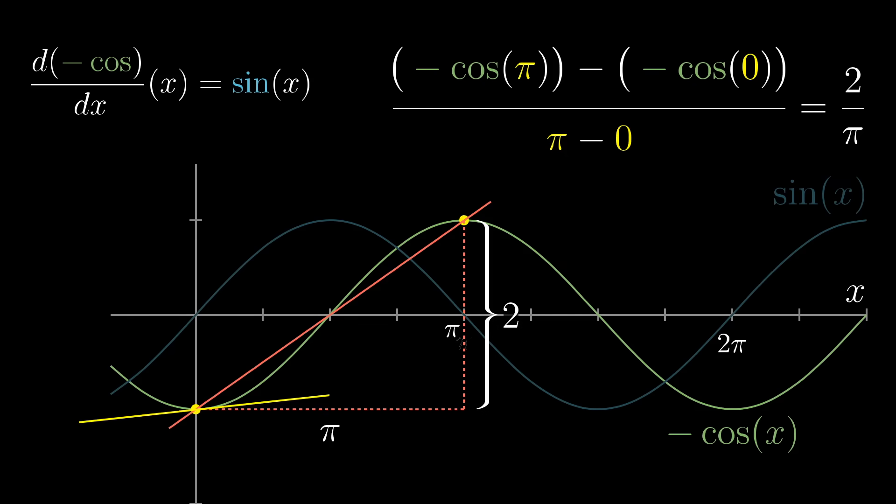Well, by definition, sine of x is the derivative of this antiderivative graph. It gives us the slope of negative cosine at every point. So another way to think about the average value of sine of x is as the average slope over all tangent lines here between zero and pi. And when you view things like that, doesn't it make a lot of sense that the average slope of a graph over all of its points in a certain range should equal the total slope between the start and end points?